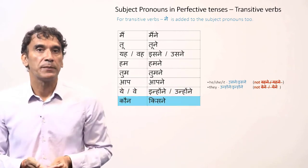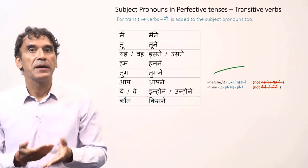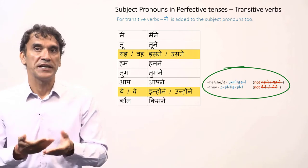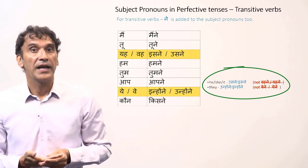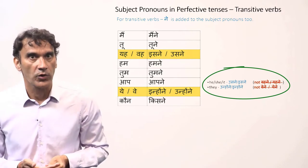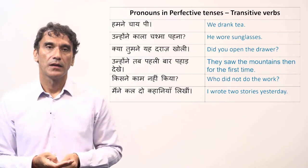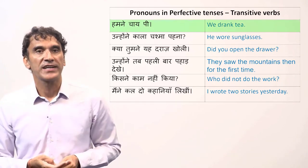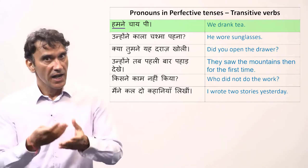The question word 'kaun' will become 'kisne' with the postposition 'ne'. Remember, only the third person will change: 'yeh' and 'wo' (he, she, and it) will become 'isne' and 'usne', and 'yeh' and 'we' (plural) will become 'inhone' and 'unhone'. Here is an example sentence: 'humne chai pi' — we drank tea. The subject 'hum' gets the postposition 'ne' to become 'humne'.